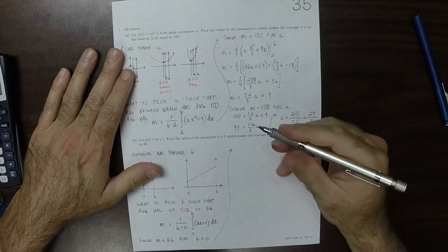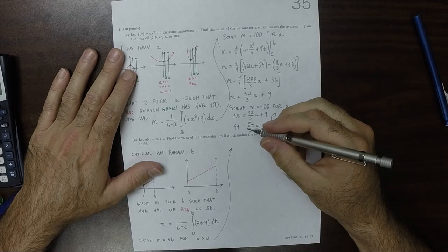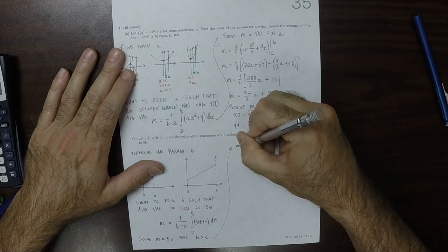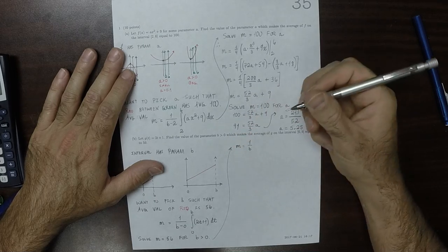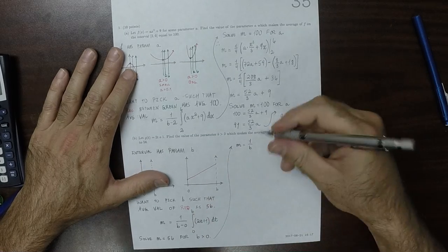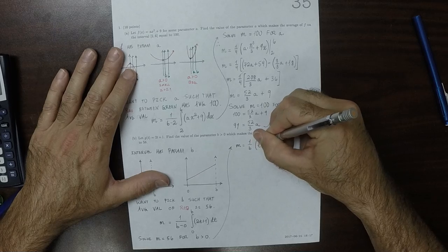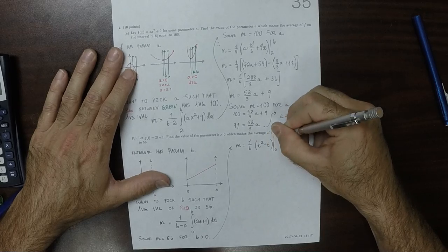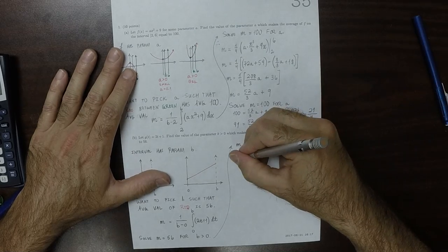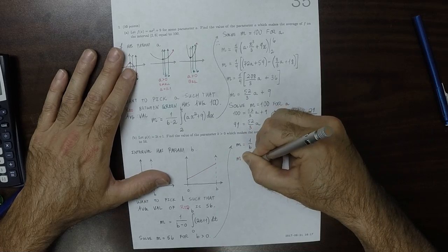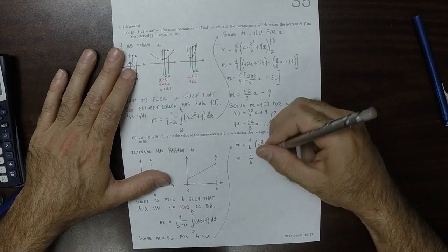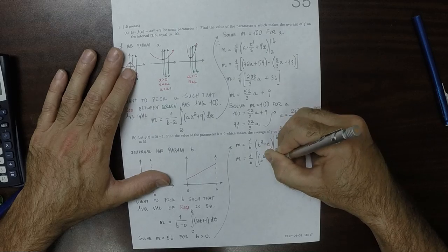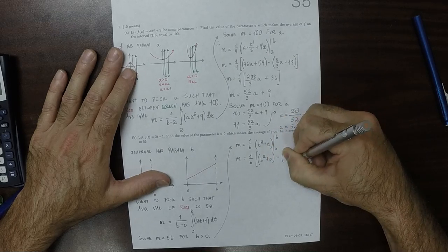Let's go ahead and do that. That means that M is 1 over B, and then the antiderivative of 2t plus 1 is t squared plus t, and then we're going to evaluate this from 0 to B. So M is 1 over B, and then plugging in B, that's B squared plus B, and then minus 0 because that's what you get when you plug in 0.